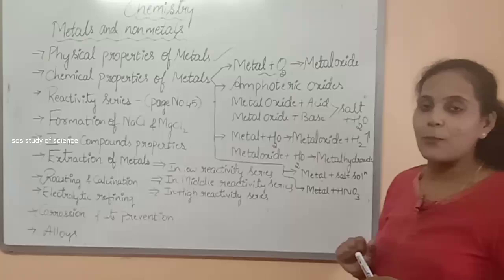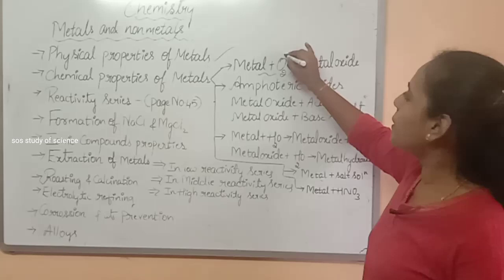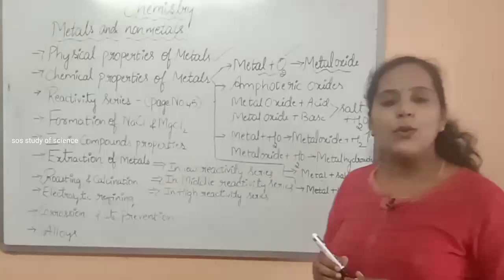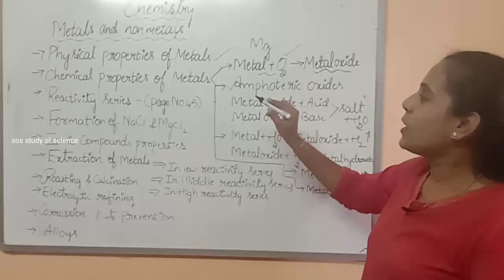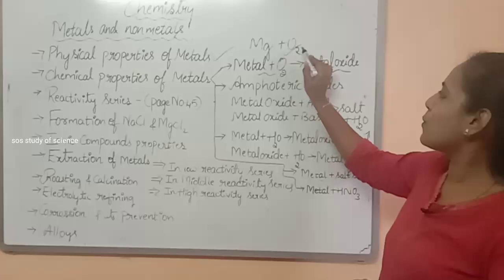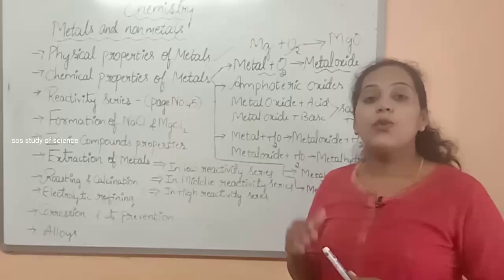The next concept you have to learn from this lesson is chemical properties of metal. There are two concepts to focus on. Firstly, you have to understand what happens when metal reacts with air. When metals are burned in the presence of oxygen, they give rise to metal oxide. For example, when magnesium reacts in the presence of oxygen, we get magnesium oxide. This magnesium oxide is a metal oxide.